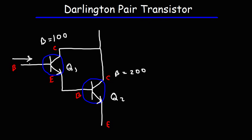Let's say that the base current — the current that's entering the base of the first transistor — is a very small number: 0.01 milliamps. With this information, you can calculate the emitter and the collector currents of each transistor.